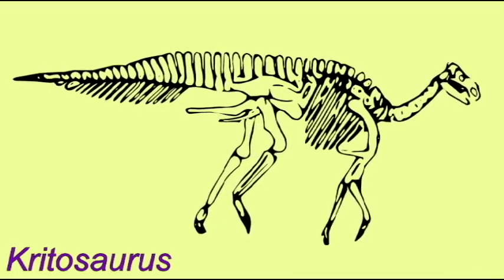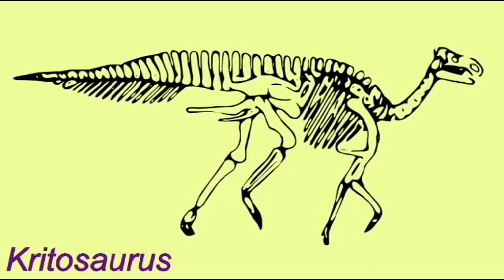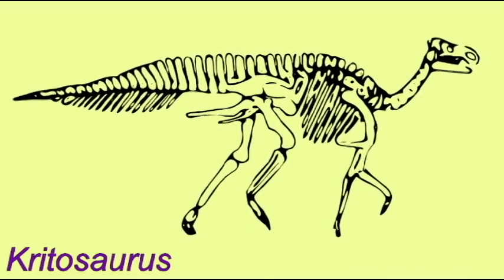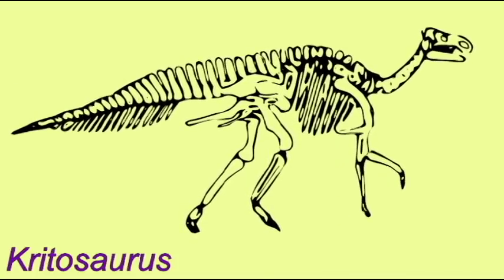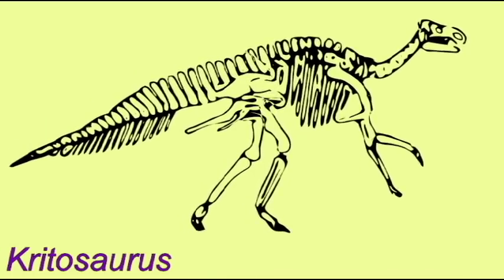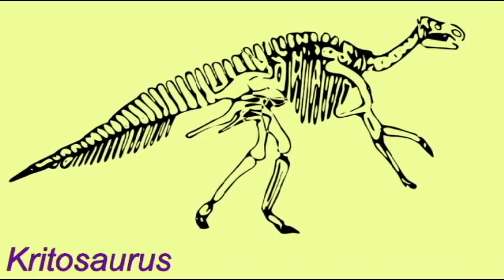It is possible that they depended more on quadrupedal locomotion as they age. The large species could achieve perhaps 15-20 km per hour in an extended run, but probably couldn't gallop. The smaller species may have achieved up to 60 km per hour.